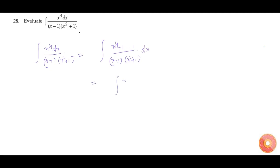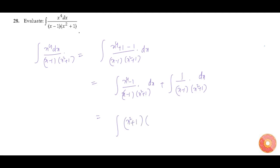This is equal to integration of (x to the power of 4 minus 1) divided by (x minus 1) into (x squared plus 1) dx, plus integration of 1 divided by (x minus 1) into (x squared plus 1) dx. Now x to the power of 4 minus 1 can be written as (x squared plus 1) into (x squared minus 1), and x squared minus 1 can be written as (x minus 1) into (x plus 1), all divided by (x minus 1) into (x squared plus 1) dx.